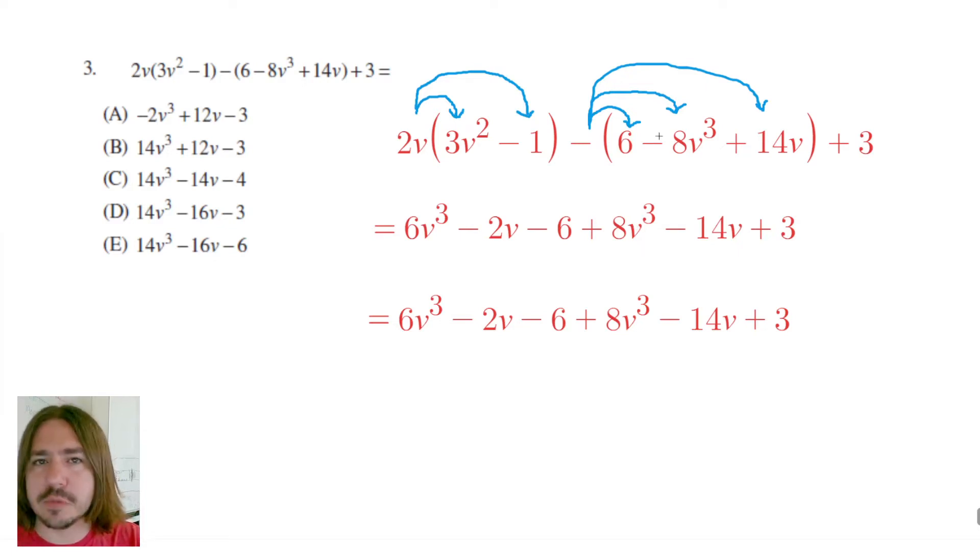So we see we have two cubic terms. Here's a v cubed here and also a v cubed here. Notice I'm underlining them with three lines. I like to do that just to kind of keep track of which terms are like. There are no squared or quadratic terms on here, so I don't need to worry about that. So I'm not going to have any terms with two underlines.